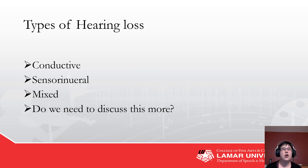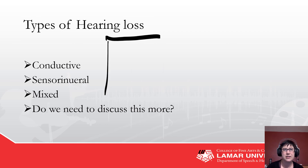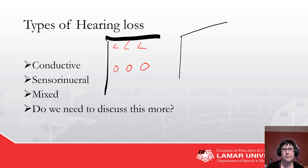There are three basic types of hearing loss: conductive, sensorineural, and mixed. For conductive hearing loss, we would expect bone to be normal and air to be abnormal. For sensorineural, we would expect bone to be abnormal and the same as air — no gap. For mixed, everything is abnormal but there are still air-bone gaps.